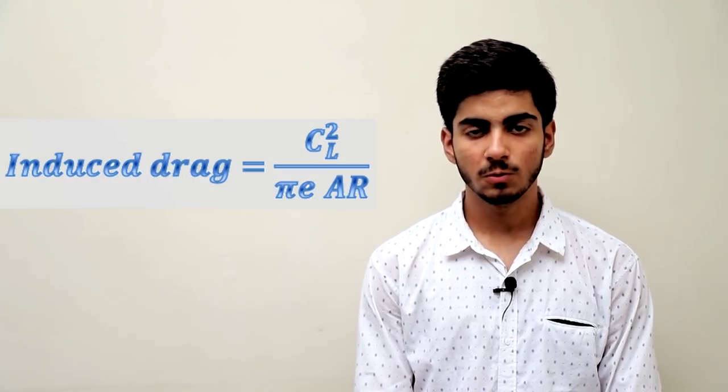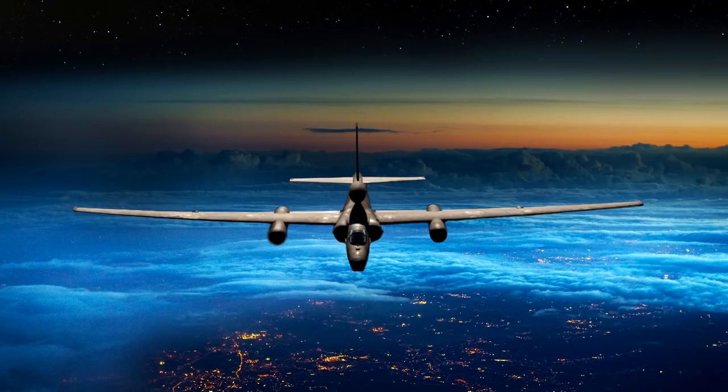And when they did that, the result was the Lockheed U-2 with a staggering aspect ratio of 14.3. This airplane could fly up to 70,000 feet and the design requirement was met.